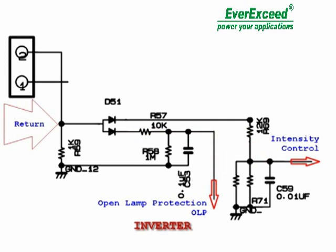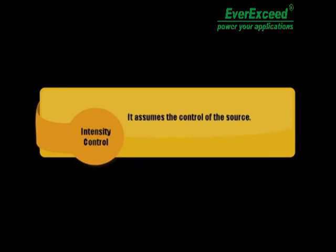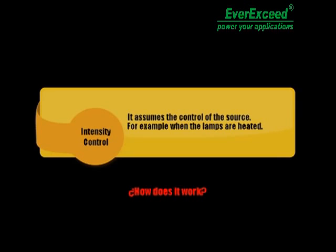The current control circuit assumes the administration of the source that we said has around 9 volts, but can get down when it becomes necessary. For example, when the lamps are heated, because as we know they conduct more and could burst. Let's see how it is made.